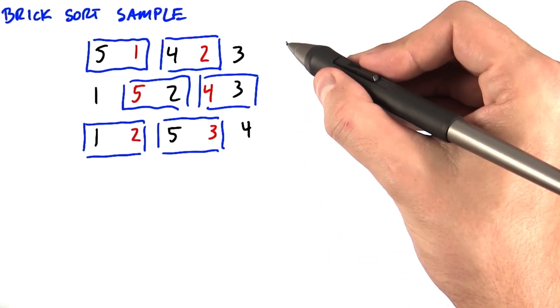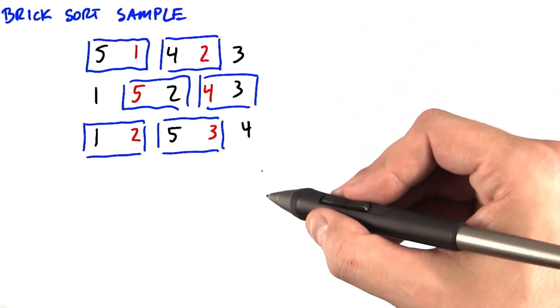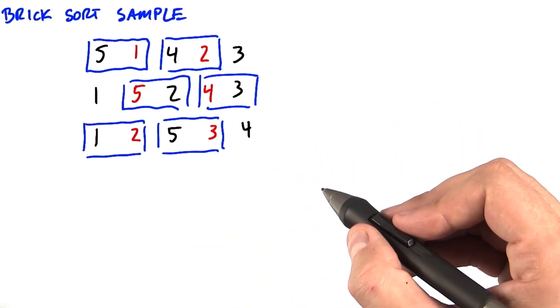We return to pairing them the way that we did in the first step, and continue to pair them one way, then the other way, then one way, then the other way, and so we finally conclude with a sorted sequence.